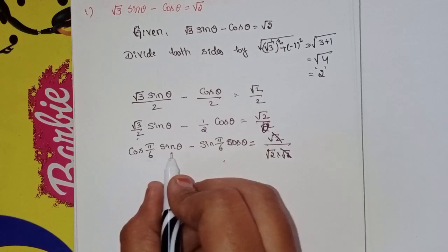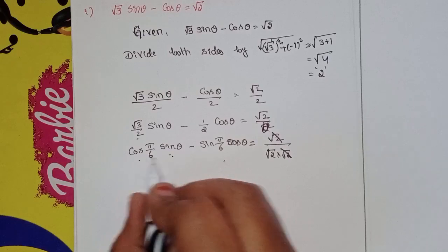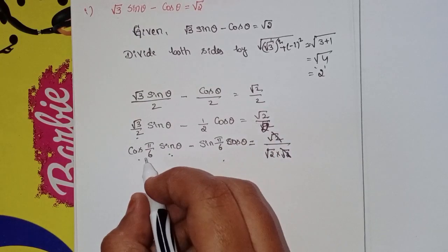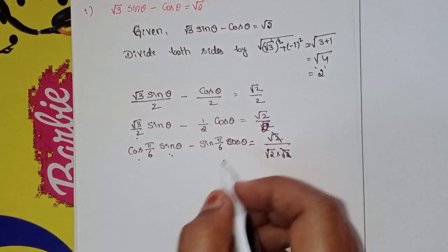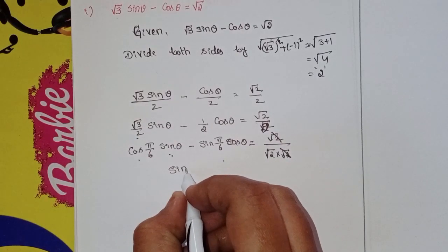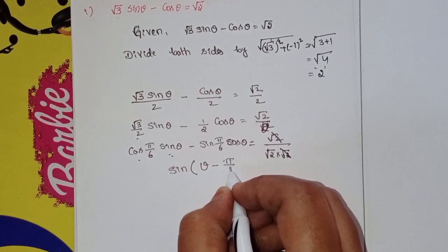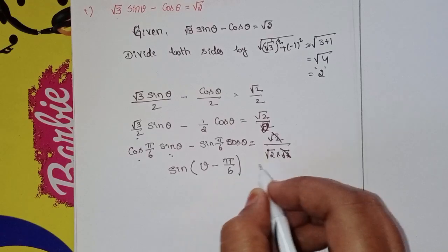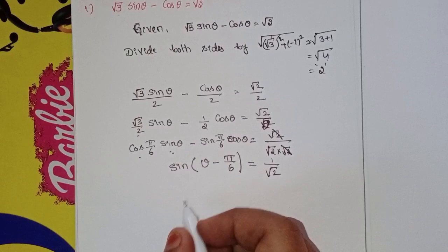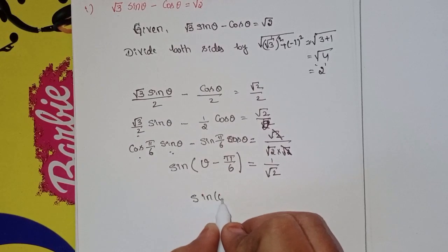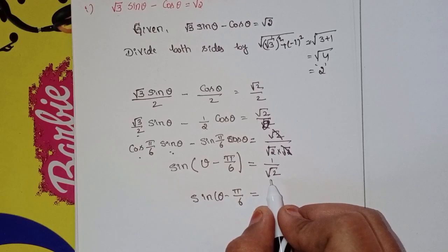Now we recognise the formula: sin a·cos b − cos a·sin b = sin(a − b). Applying this, we get sin(θ − π/6) = 1/√2.